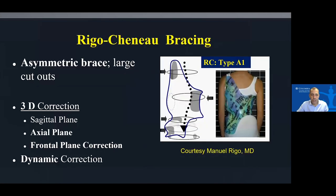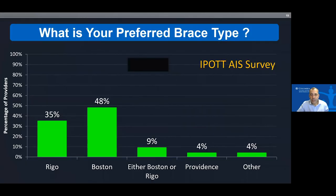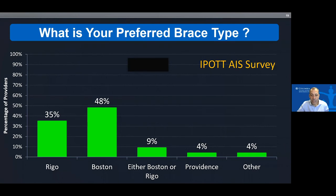That study shows that asymmetrical designs that allow maintenance of sagittal plane do better. That's what the Rigo Chêneau brace is all about — an asymmetrical brace with large cutouts allowing large amounts of 3D correction in the sagittal, axial, and frontal planes. There's also clinical evidence: Paul Sponseller's group showed lower rates of progression and better curve correction with a Rigo compared to a Boston brace. Yet surveys show only about a third of surgeons use a Rigo-style brace.